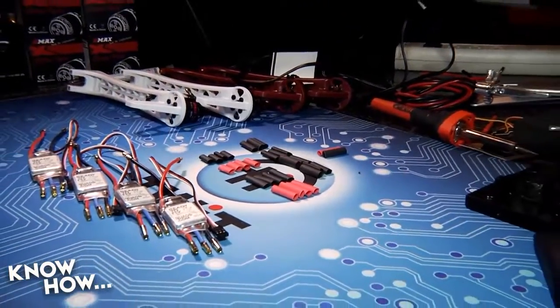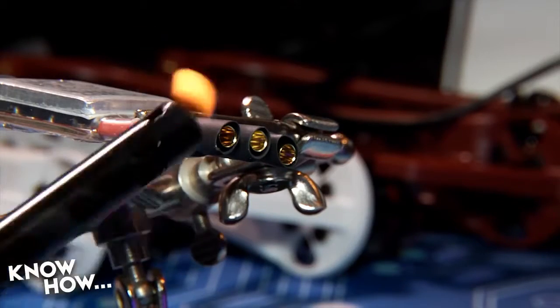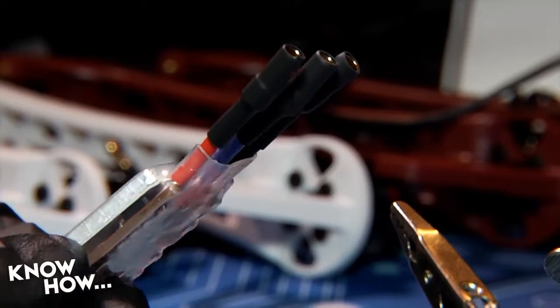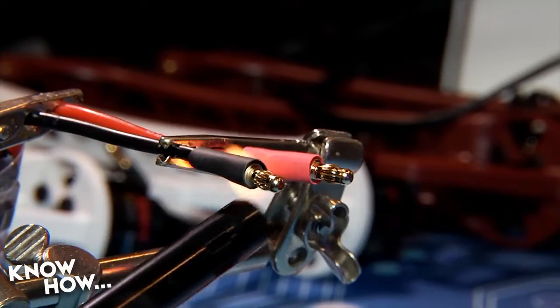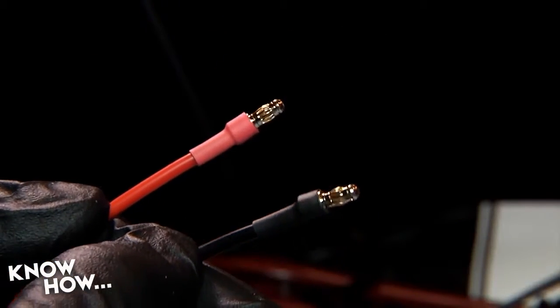Once you're satisfied with your soldering work, use lengths of 3/16-inch heat shrink tubing to insulate the connectors. For the female connector, you want to cover everything from the end of the connector to about a quarter inch past. For the male connector, insulate everything from the rotating part of the bullet to about a quarter inch past.